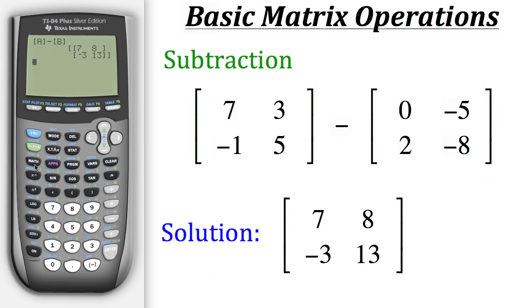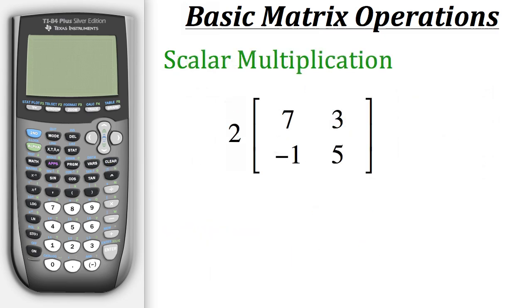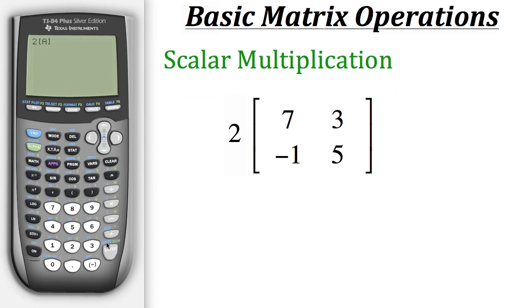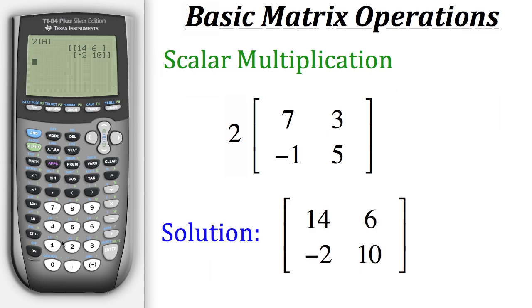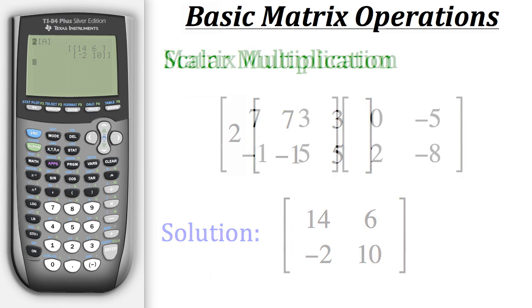Now let's try scalar multiplication. We have 2 times matrix A, which contains 7, 3, negative 1, and 5. We first enter the scalar 2, then call up matrix A. When we hit enter the calculator computes 2 times matrix A, giving us the solution 14, 6, negative 2, and 10.